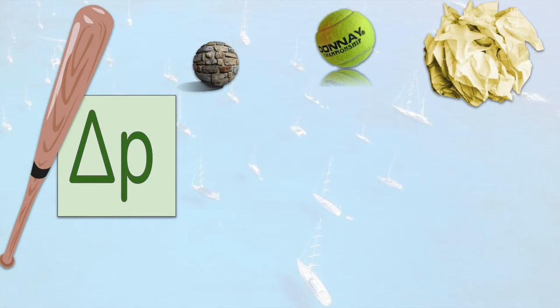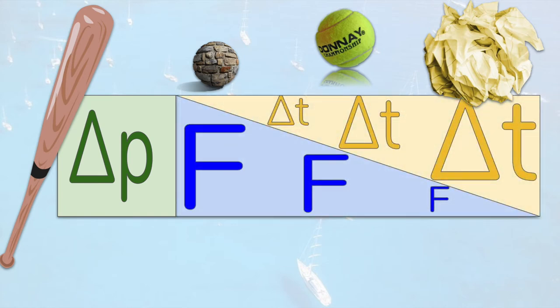So let us consider what will happen when we hit different objects. In this situation we hit the rock, the tennis ball, and the paper so that they all experience the same change in momentum. This will not necessarily need the same force each time. It depends how long they're in contact with the bat. The harder the ball, the shorter the time it will be touching the bat, and so we can see that a larger force will be needed to change the momentum of the hardest ball.